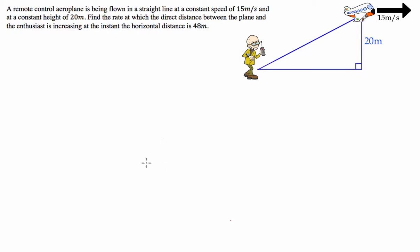G'day guys, we've got a calculus question today. Specifically, we're going to be applying the chain rule to solve a related rates question. So, what is the question? We've got a remote control aeroplane being flown in a straight line at a constant speed of 15 metres a second and at a constant height of 20 metres. Find the rate at which the direct distance between the plane and the enthusiast is increasing at the instant the horizontal distance is 48.